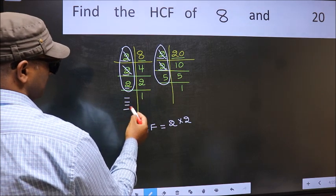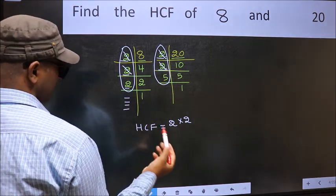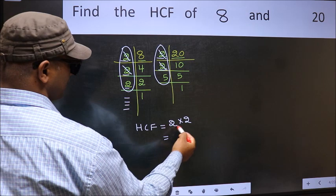No more numbers have been left out. So, our HCF is 2 times 2. 4 is our HCF.